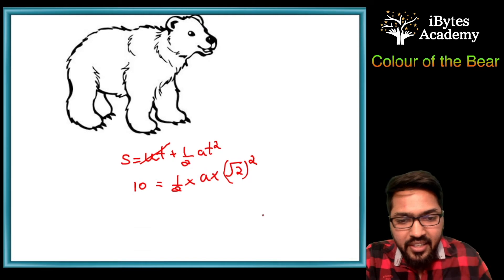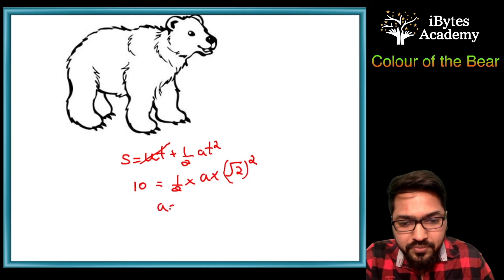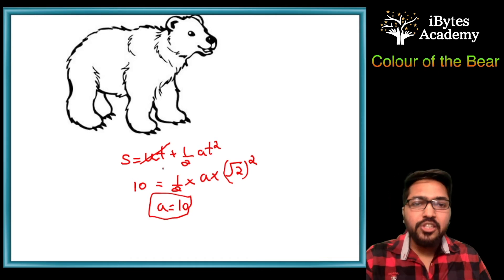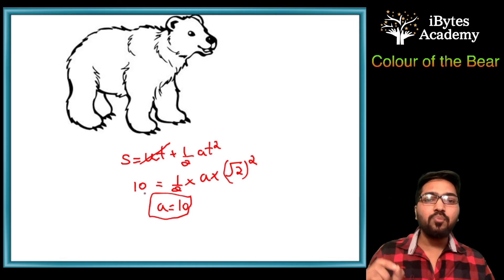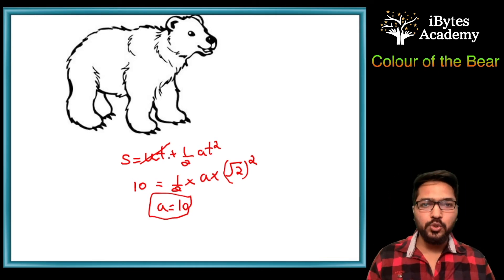So we are getting A is equal to 10, right? So acceleration due to gravity is slightly more than 9.8, which is the usual one.